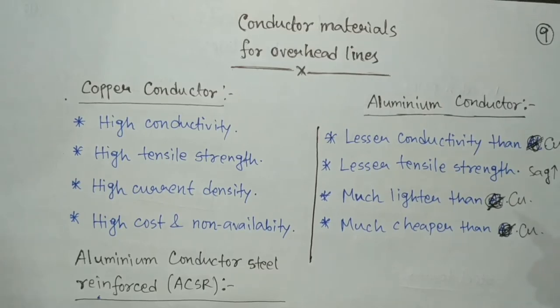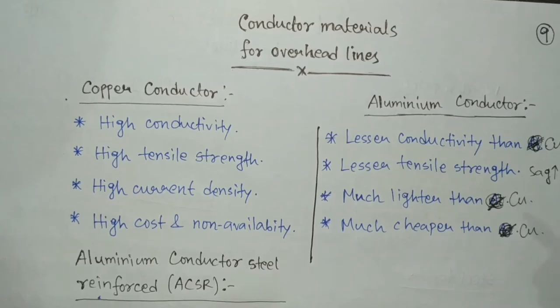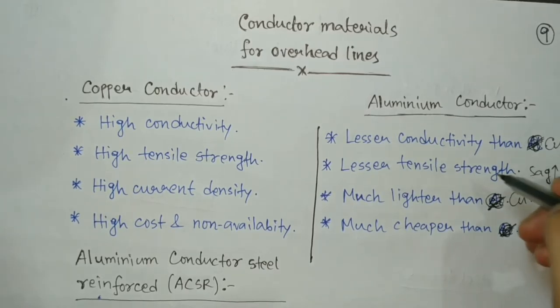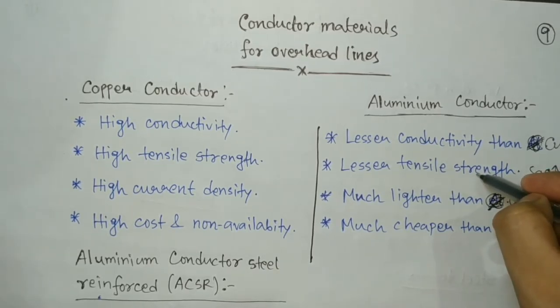Because sag is very high, the transmission tower height needs to be very large just to maintain the clearance from the ground, which makes the tower cost very high as well.